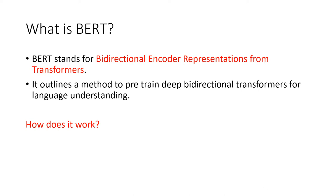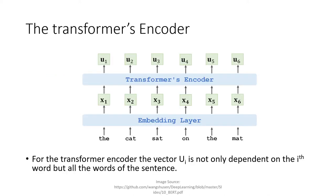How does BERT work? To understand how BERT works, we need to first understand how a transformer encodes. The transformer transforms the input to a different vector space. This draws a parallel to a Fourier transform, which transforms the time domain to the frequency domain.